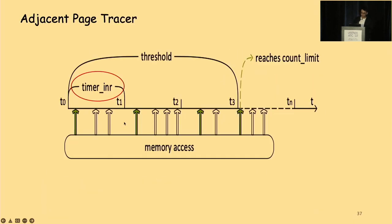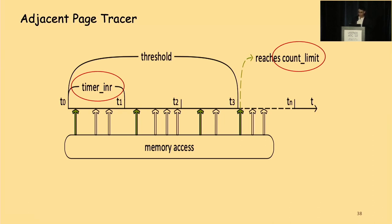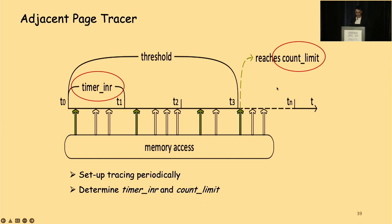For its tracing purpose, the adjacent page tracer sets up tracing to collected adjacent pages at each time point from t0 to t1 to tn. The interval between two adjacent time points is called the timer interval. The tracer captures the first memory access in each timer interval period and ignores subsequent accesses, updating the charge leak counter. Whenever the counter reaches a predefined limit called count limit, the row refresher is triggered. The adjacent page tracer needs to implement periodic tracing and determine a timer interval and count limit short enough so a Rowhammer attacker cannot induce bit flips within the threshold period.